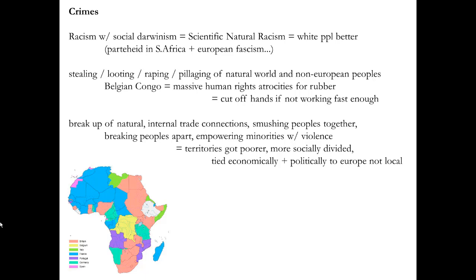The third crime is one we're still living with today: the breakup of natural internal trade connections. Europeans smushed peoples together who weren't normally together, and broke apart people who were supposed to be together, empowering minorities using violence — giving guns to oppressed peoples to help oppress the majorities. Territories got poorer, more socially divided, and tied economically and politically to Europe rather than to their local regions. The wealth of Africa, India, and China was flowing from the interior to the ports, and from the ports to Europe.